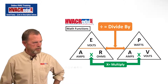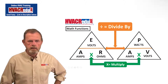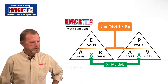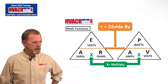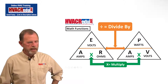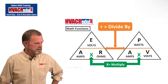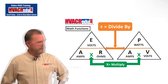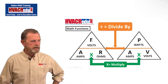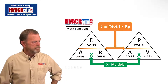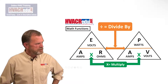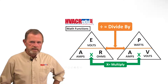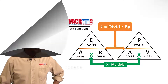Amps into watts will give me volts. Volts divided into watts will give me amps. Resistance in ohms divided into volts gives me amps. Amps divided into volts gives me ohms.